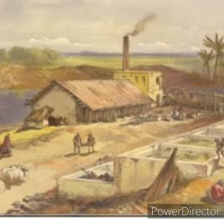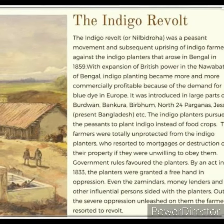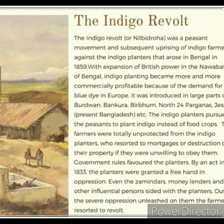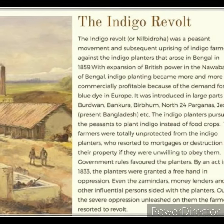The Bengal Indigo Cultivators' Strike was the most militant and widespread peasant uprising. The European indigo planters compelled the tenant farmers to grow indigo at terms highly disadvantageous to the farmers. The farmers were not allowed to cultivate food crops.